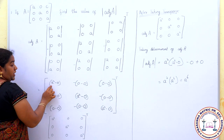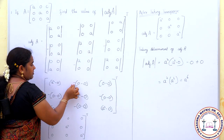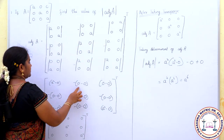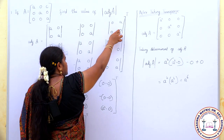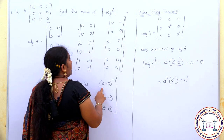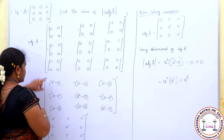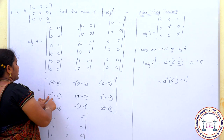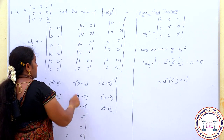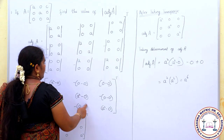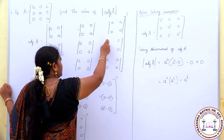A times A gives A squared, minus 0 times 0 which is 0, so the cofactor is A². The terms involving zeros give 0. With the appropriate plus and minus signs applied, the off-diagonal cofactors evaluate to 0, while the diagonal entries give A squared each.